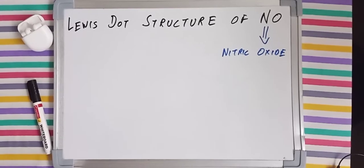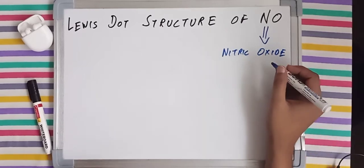Namaste everyone. Today we are going to draw the Lewis dot structure of NO, which is also known as nitric oxide.